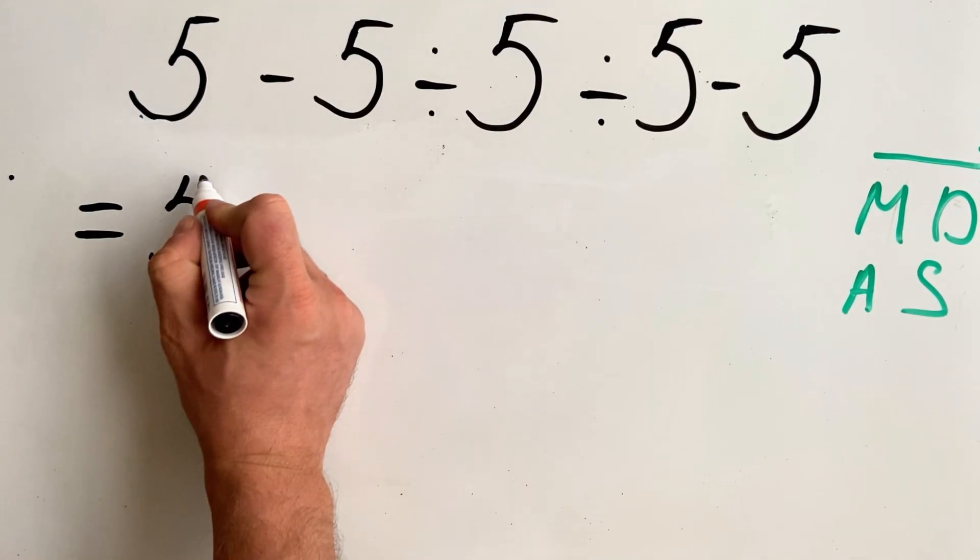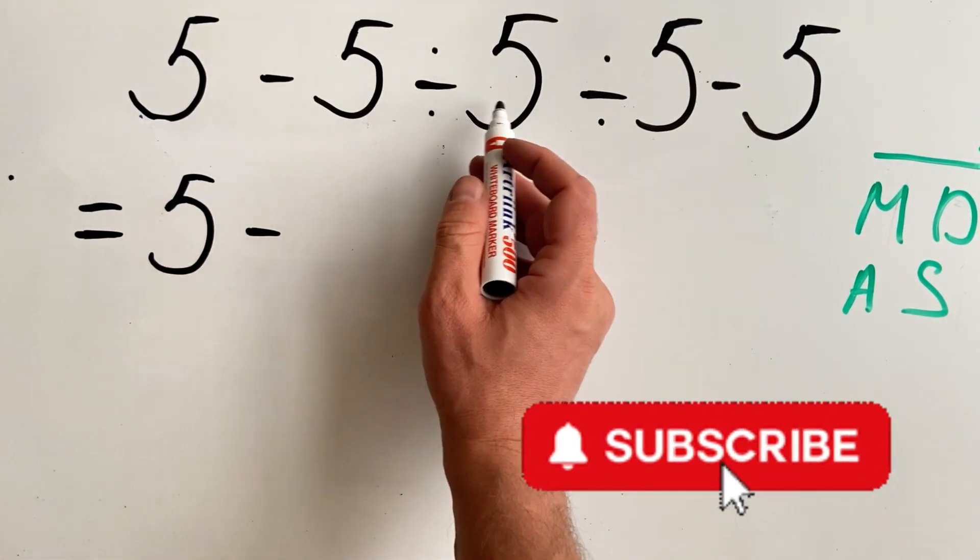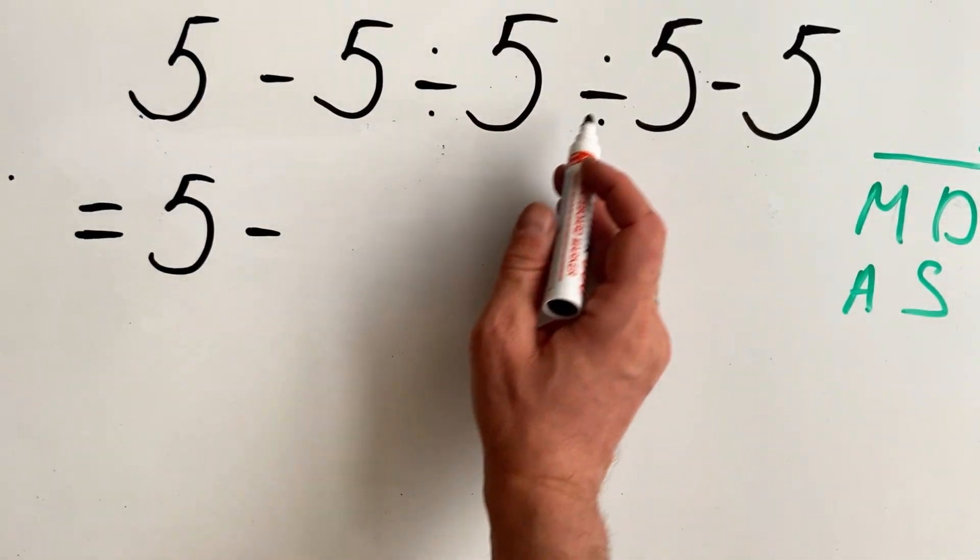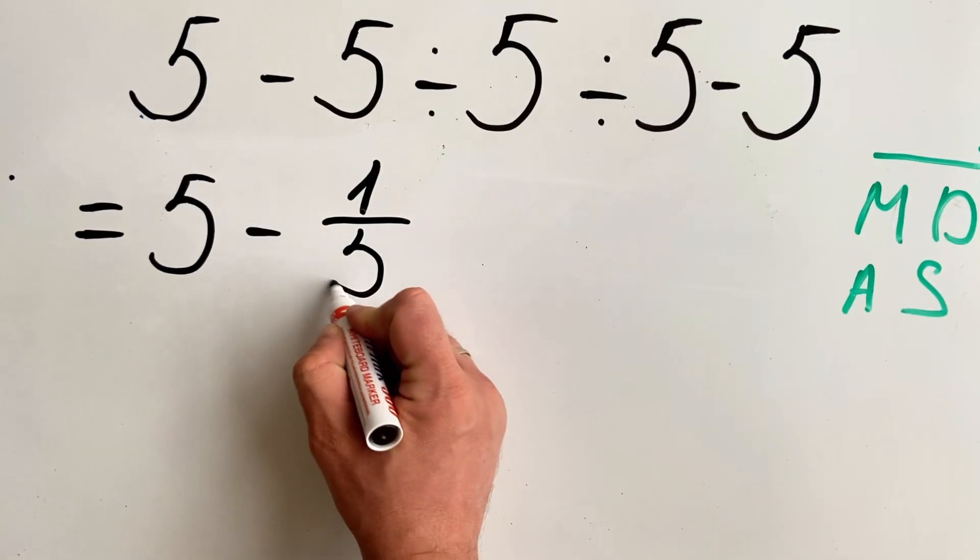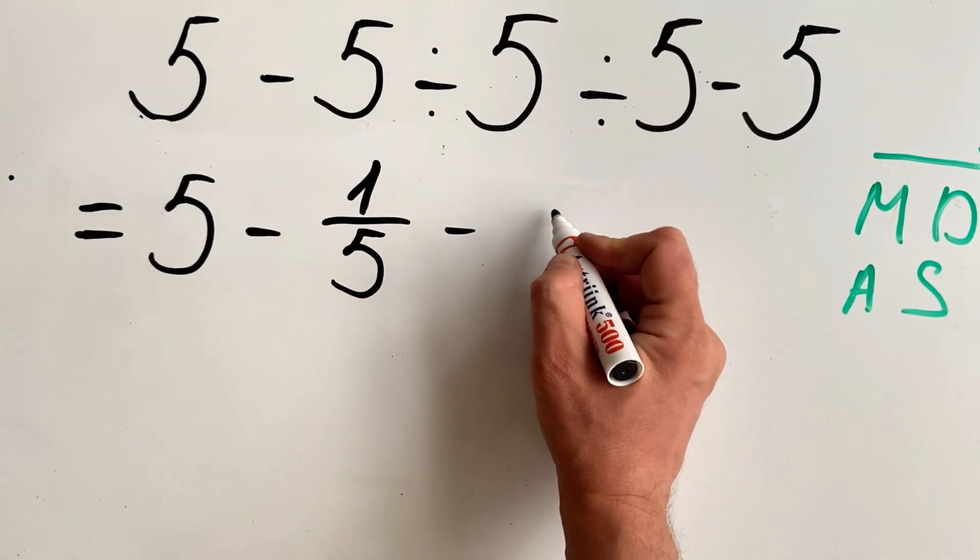We have 5 minus... So we get 5 divided by 5 equals to 1, 5 divided by 5 is 1 fifth, we can write it, and minus 5.